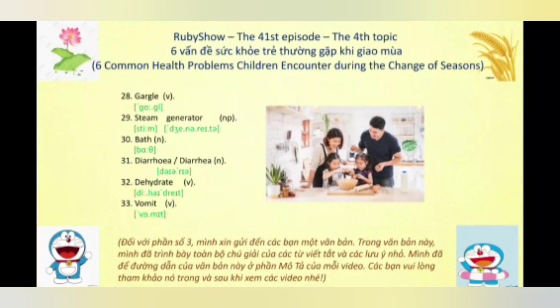Từ số 29, chúng ta có một cụm danh từ được cấu tạo bởi 2 danh từ: 'steam generator.' Danh từ số 1 đọc là 'steam' và danh từ số 2 đọc là 'generator,' nhấn âm 1. Cụm danh từ này có nghĩa là máy xông hơi nước.